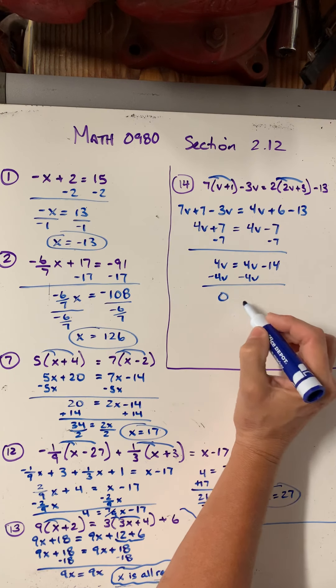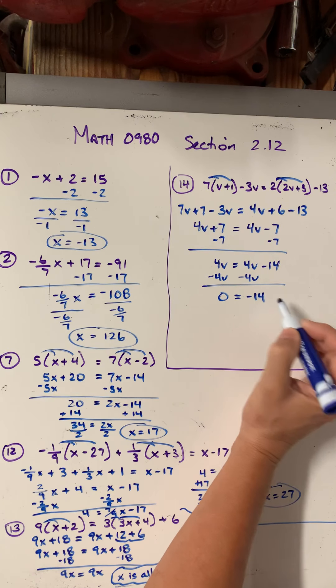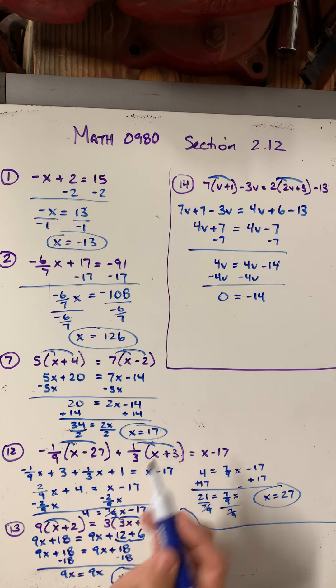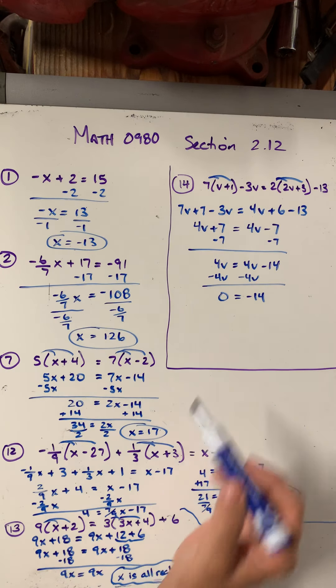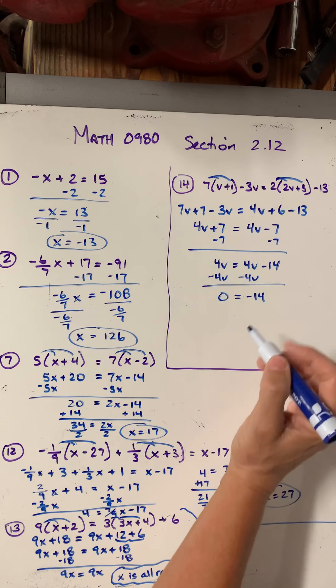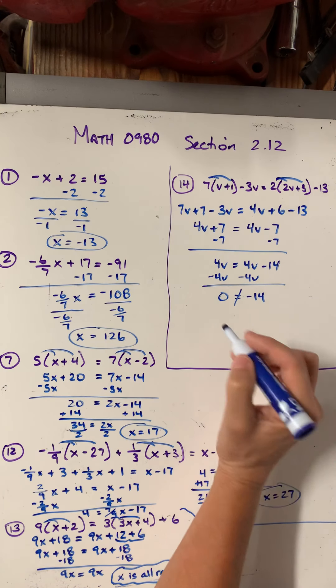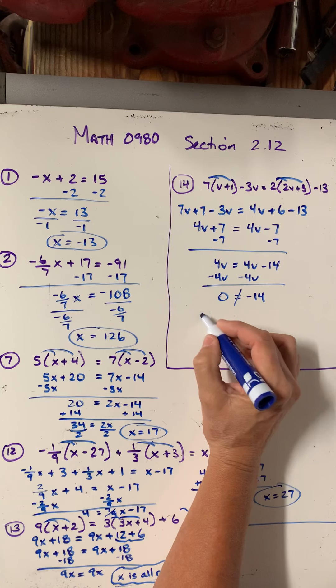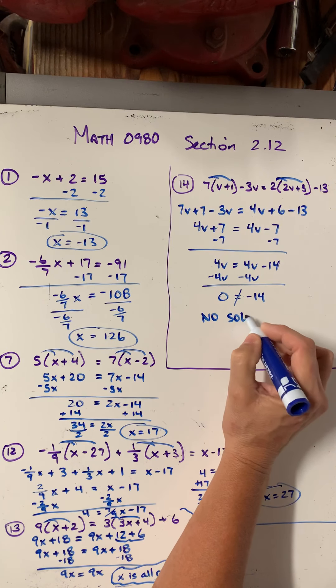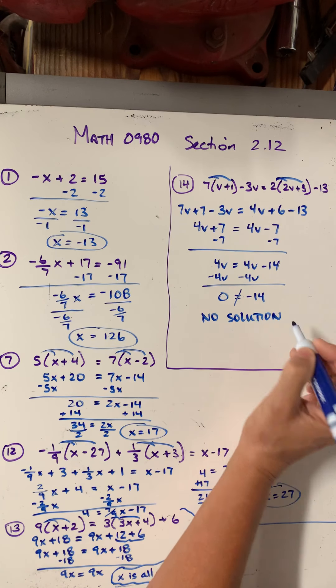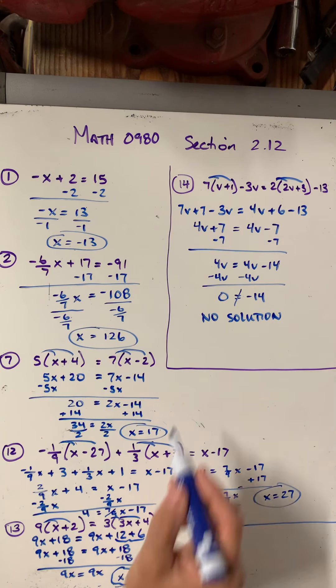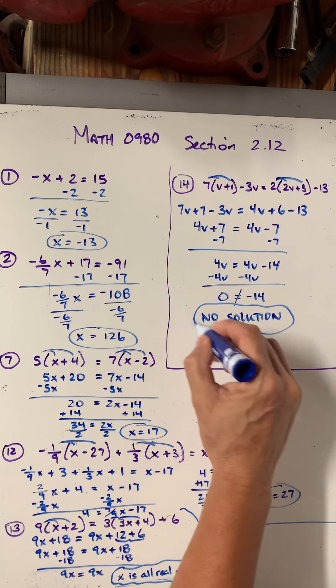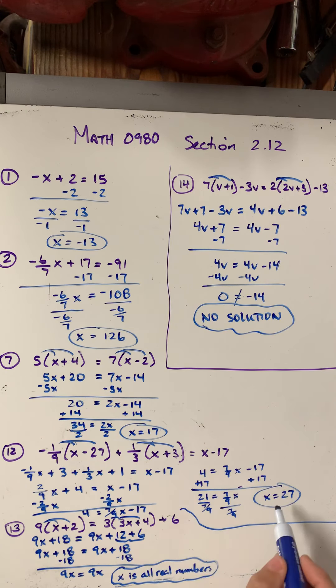Now all of a sudden I get 0 equals negative 14, which is never true. You've lost the term that had the variable in it, and you have something that's not true. 0 is not equal to negative 14. So this would be no solution. So there are three types of results that you could get. You could get no solution, all real numbers, or a single number as a result.